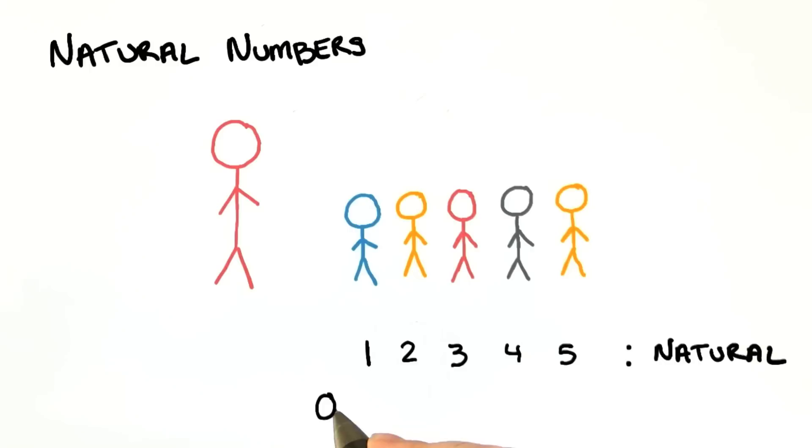But zero does have some things in common with the natural numbers. We can talk about there being zero of some kind of object, like cupcakes. When considered as a single group, zero and the natural numbers make up what we call the whole numbers.